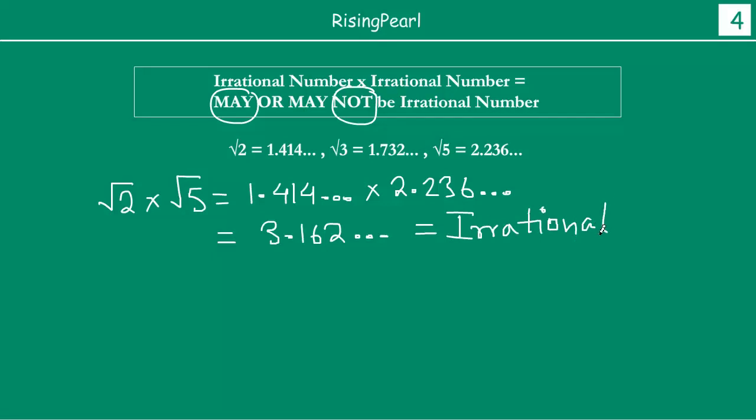This is a clear-cut example where you multiply two irrational numbers and the result is an irrational number.